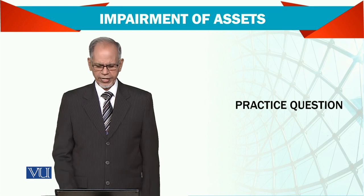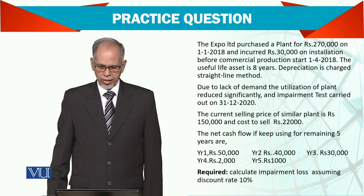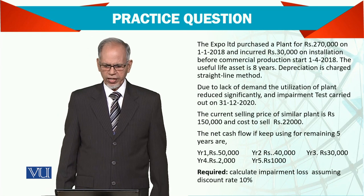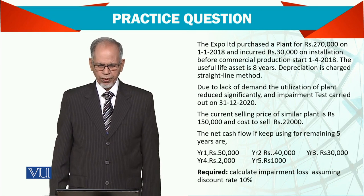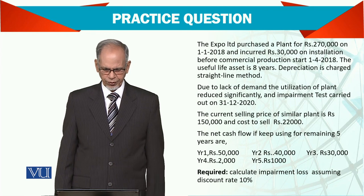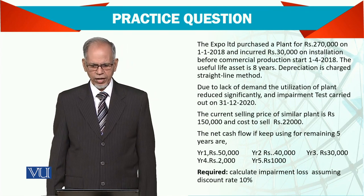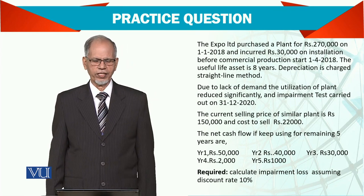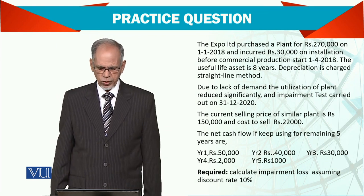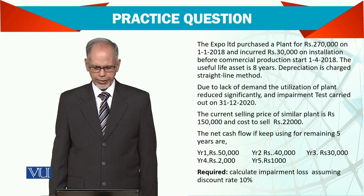Let's see another example. Expo Ltd purchased a plant for $270,000 on 1st January 2018 and incurred $30,000 on installation. So the cost comes to be $300,000, that is $270,000 plus $30,000.